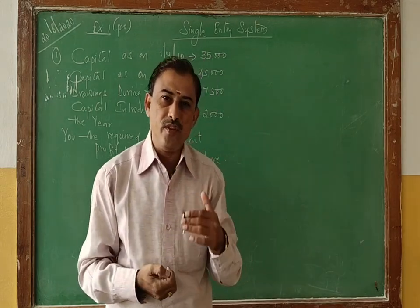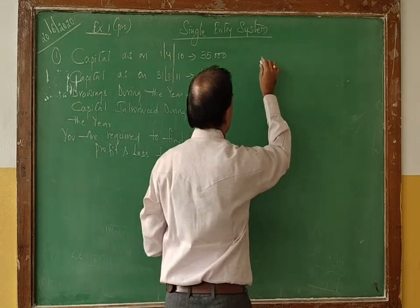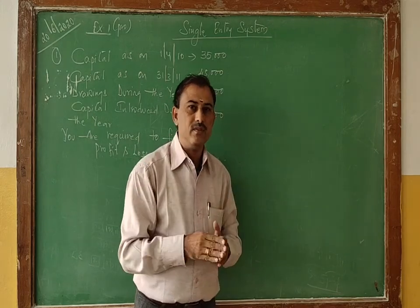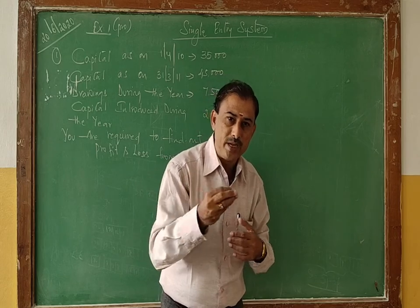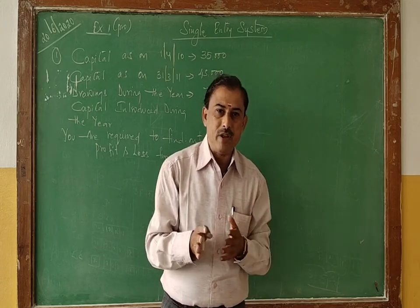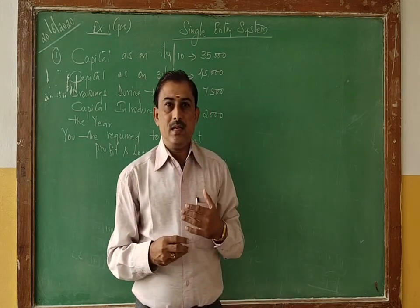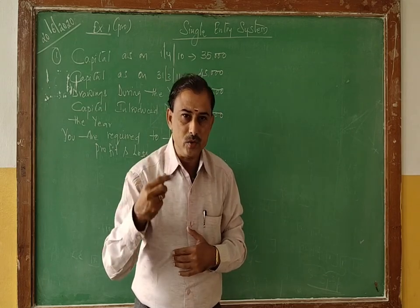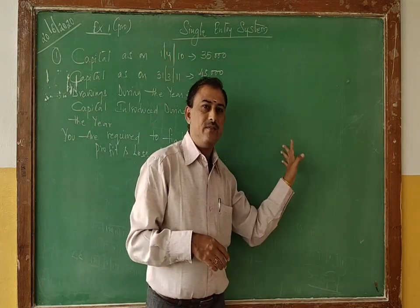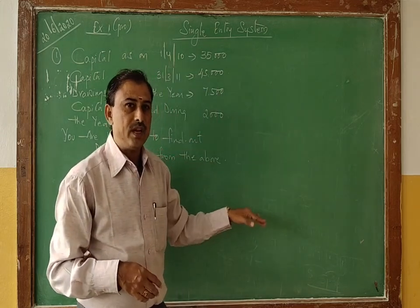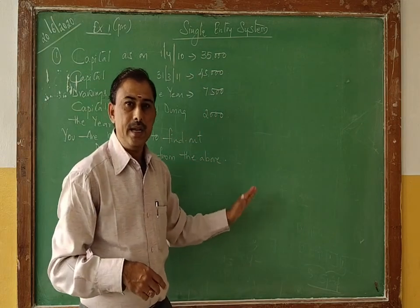Under the single entry system, we find out the profit or loss made by a business using this technique: we start with capital at the end of the year, then add drawings made during the year. Drawings means any personal payments of the proprietor, whether in cash or goods. Then we deduct any additional or fresh capital introduced during the year. The resultant figure is called net adjusted capital. From that, we deduct capital at the beginning of the year, and the result is called net profit or net loss.